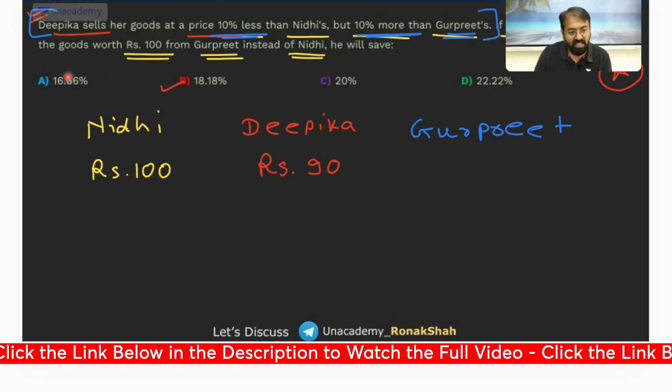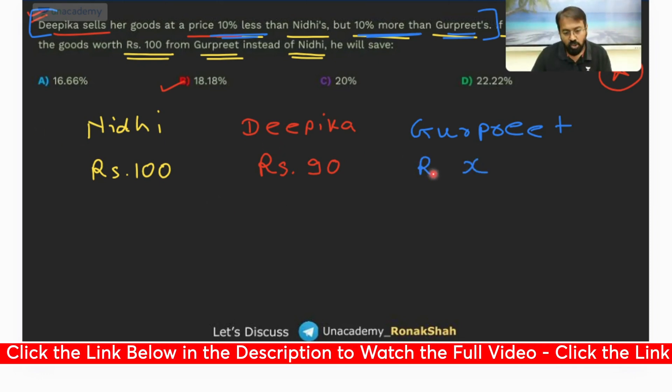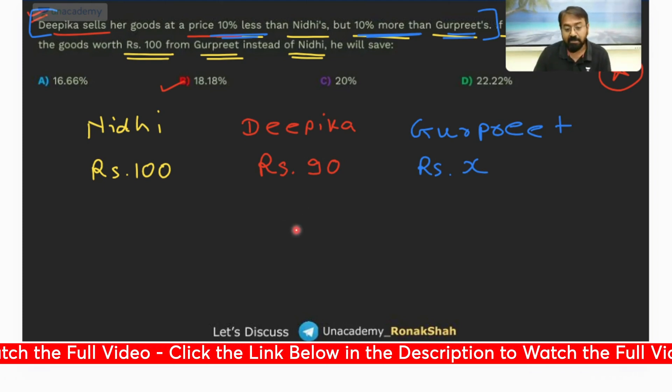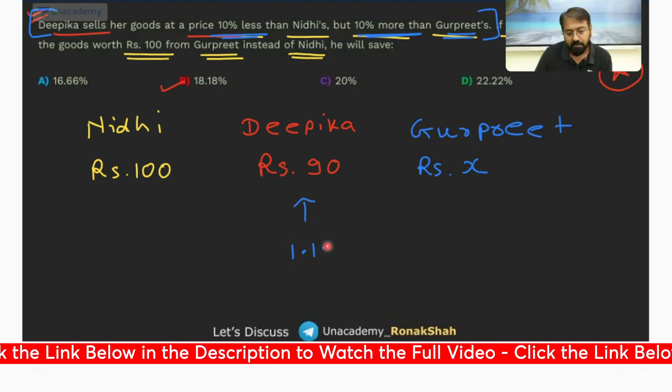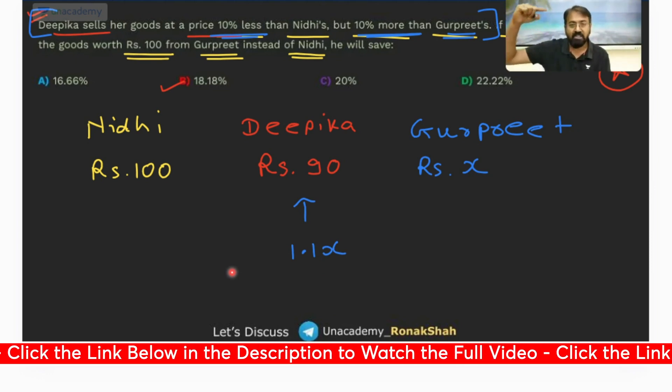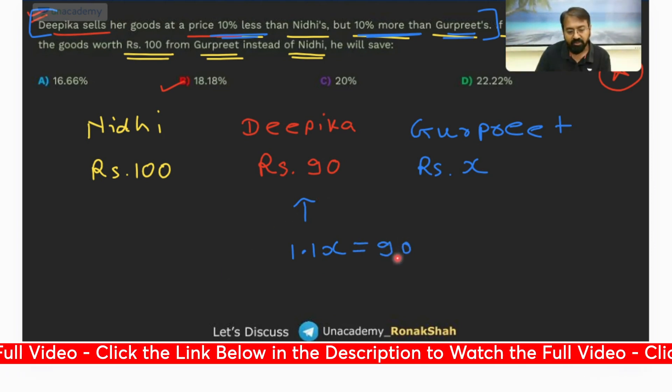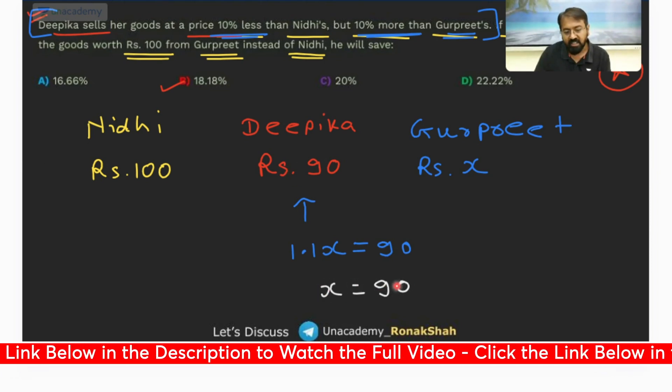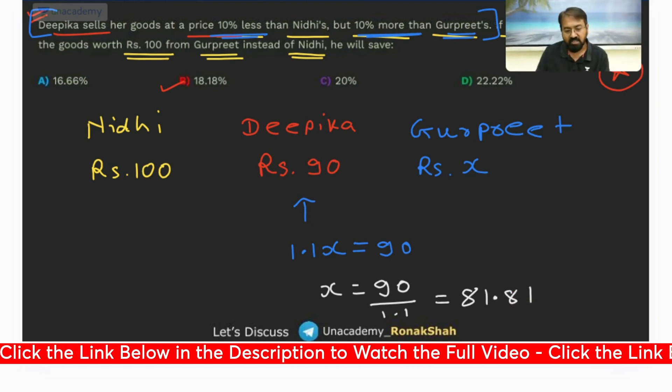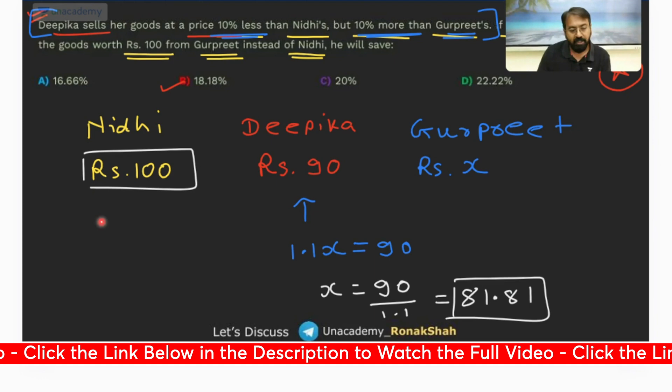Deepika sells her goods at price 10% more than Gurpreet's price. Now understand this part. If Gurpreet is selling at rupees X, can I say Deepika must be selling at a price which is 10% more than X? So Deepika's price should be 1.1X. So this 90 is equal to 1.1X. If I solve this, X is 90 divided by 1.1, which is 81.81. So a customer who would have paid 100 rupees to Nidhi will require to pay only 81.81 to Gurpreet. So the savings is 18.18%.